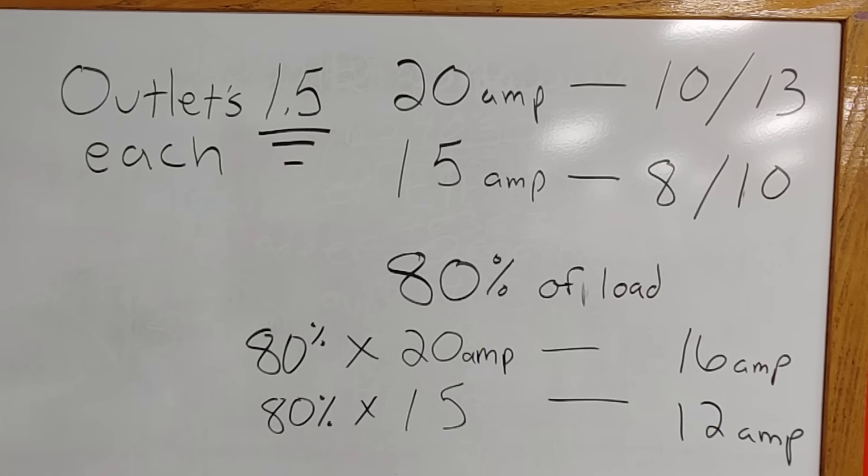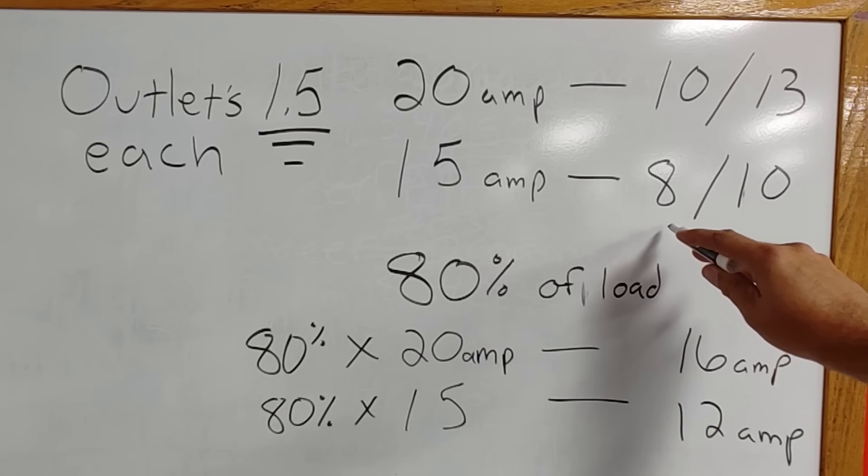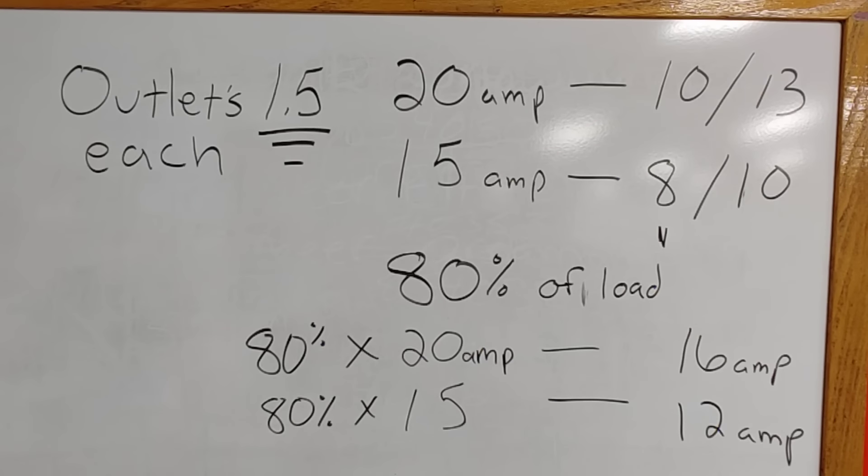The first school of logic is you should only put 8 outlets on a 15 amp circuit and 10 outlets on a 20 amp circuit. But some people also think you should put 13 on a 20 amp circuit and 10 on a 15 amp circuit.